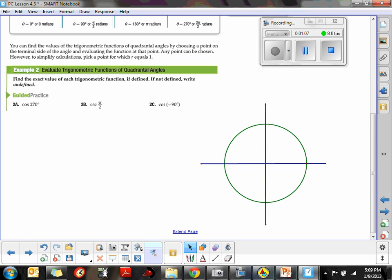In the next example, we want to do the cosecant of π/2. Now π/2 is equivalent to 90 degrees, so we're starting on the positive x-axis. We're rotating π/2 units, which puts us on the positive y-axis.